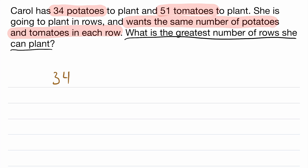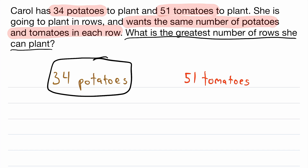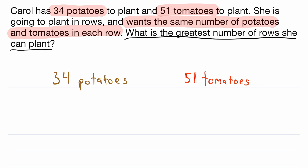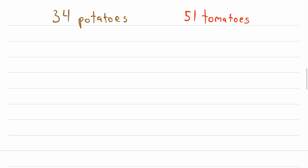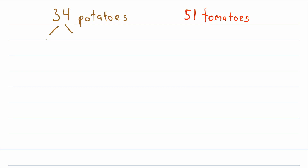She's going to plant in rows and wants the same number of potatoes and tomatoes in each row. So what is the greatest number of rows that she can plant? We've got 34 potatoes and 51 tomatoes. The greatest number of rows is the greatest number that divides both 34 and 51 — which is just the greatest common factor. So let's get to our factor trees. 34 is even, so we can factor it into 2 times 17, and both are prime — done.